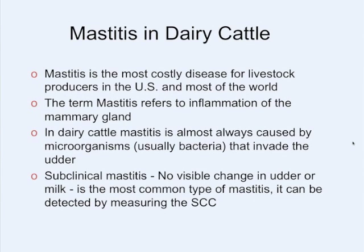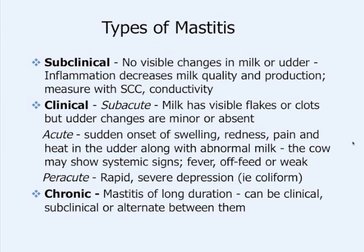Mastitis is basically the number one disease of dairy cattle, and it doesn't matter if you're conventional or organic. What it means is infection or inflammation of the mammary gland. The 'itis' is inflammation and 'mast' refers to the mammary gland or the breast. When we have infection, we have inflammation — that's what mastitis is. It's almost always caused by bacteria, though there are a few yeast and algae infections.